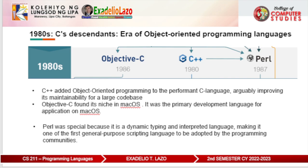Perl was an interesting exception in that era. When the consensus was that C++ or C were needed for any serious programming, Perl was regarded as a scripting language instead. Perl was special because it is a dynamically typed, interpreted language, making it one of the first general-purpose scripting languages to be adopted by the programming community. It was thus widely used in system administration due to its flexibility.